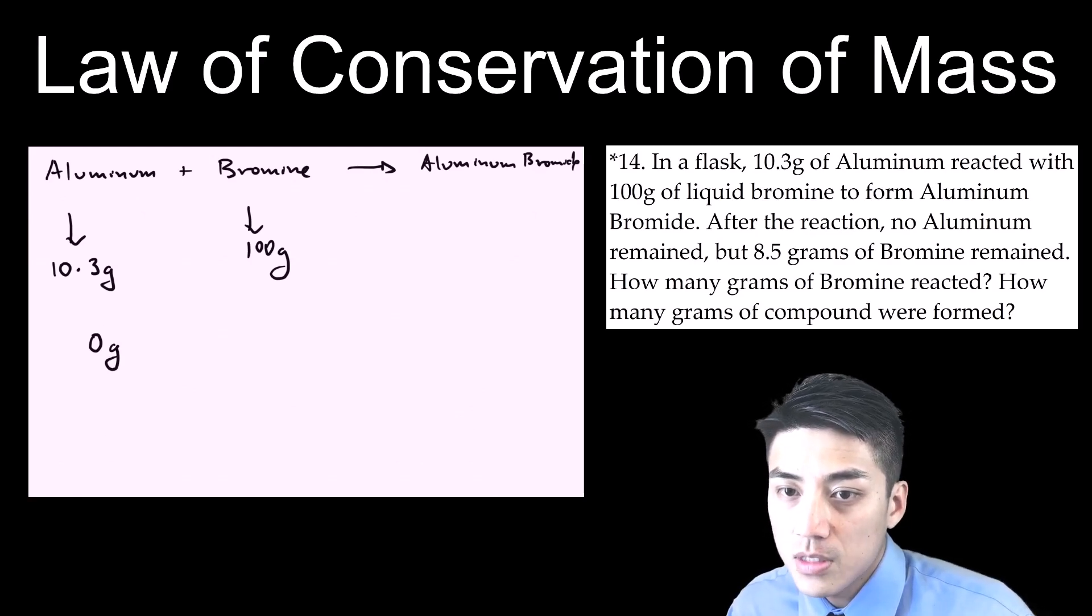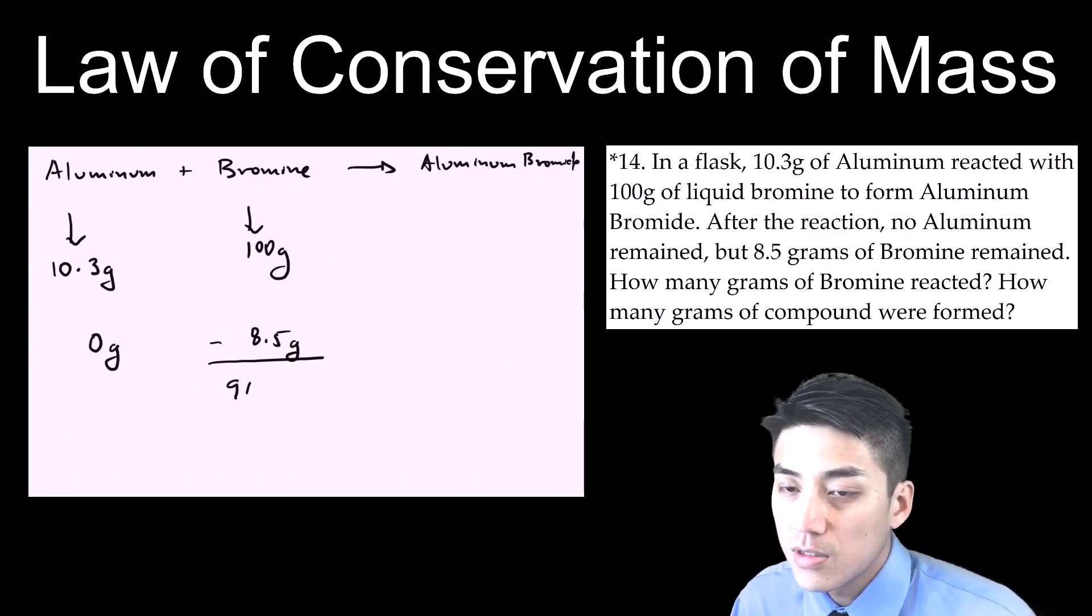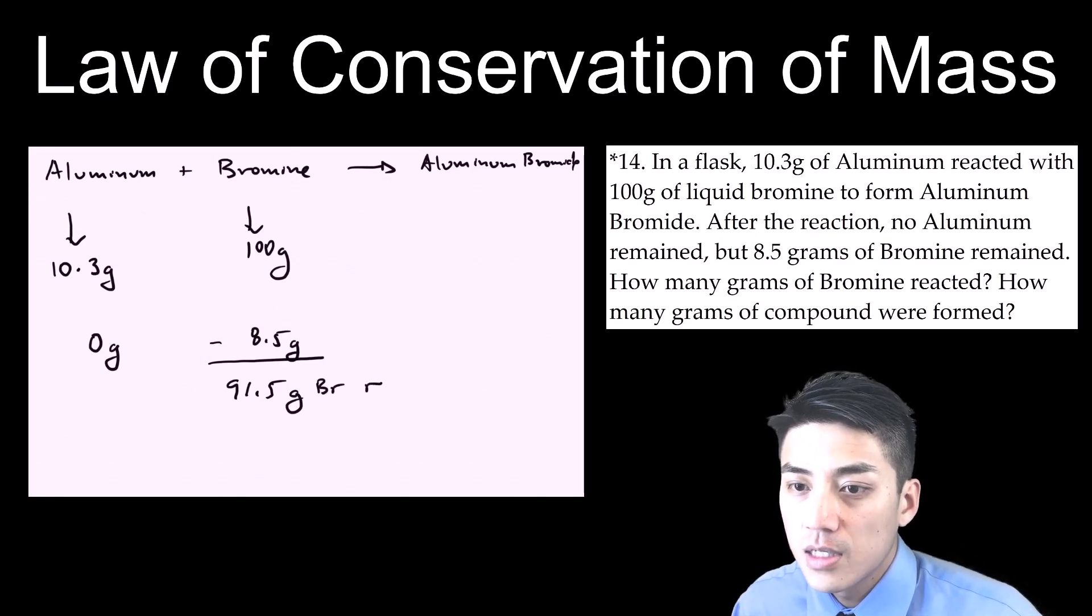Whereas for bromine, you didn't use it all up, eight and a half remained. And then they ask you, how much bromine, how many grams of bromine reacted? Just go 100 minus 8.5. You get 91.5 grams of bromine which reacted.